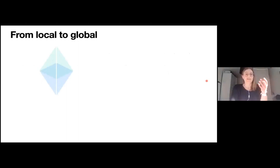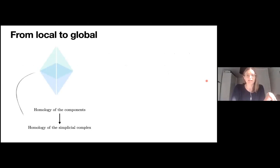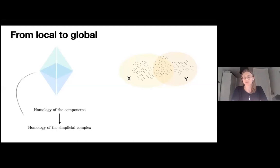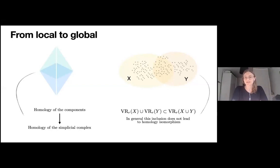In algebraic topology, it is possible to retrieve the homology of a simplicial complex by taking a decomposition of it into sub-complexes and studying the long exact sequence in homology associated. In applied topology, instead, one usually does not start with a simplicial complex but with a metric space. The most naive way of decomposing a metric space is by taking a decomposition covering all its points. However, when we build a simplicial complex out of it, such as the Vietoris-Rips complex, the topological information obtained from the decomposition is not the same as the topological information of the total space.